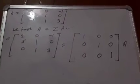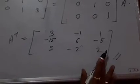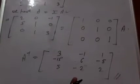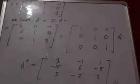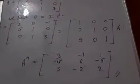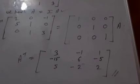I am giving you its answer. A inverse is equal to: 3, minus 1, 1; minus 15, 6, minus 5; 5, minus 2, 2. Do by yourself. Whenever you are facing a problem, just ask me — I will explain, no problem. But do by yourself, understood? Do and send to me. I am waiting for your solutions. Thank you very much.